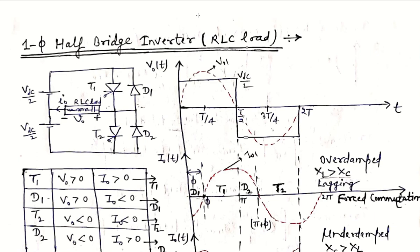In a VSI it is a property that the output load voltage waveform is independent of the load current waveform for any kind of load. So in this case the output voltage waveform remains the same as in previous lectures for R, L, and RL loads. The output voltage waveform is a square wave in nature, which is a periodic AC voltage waveform.